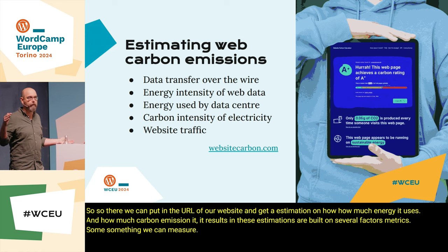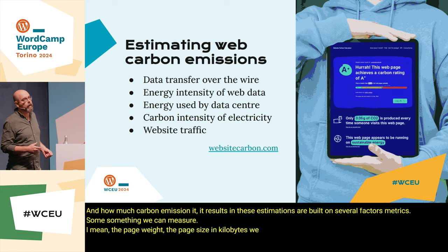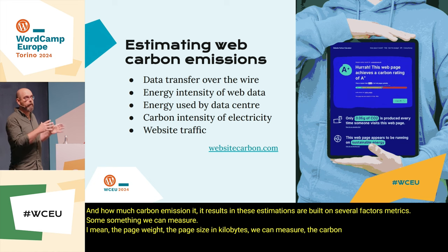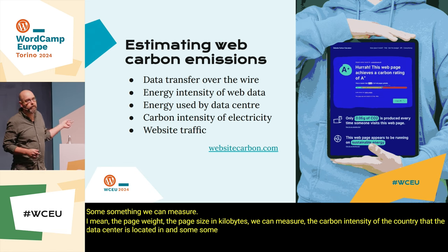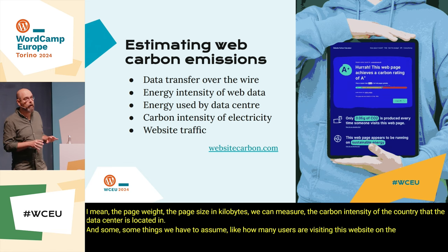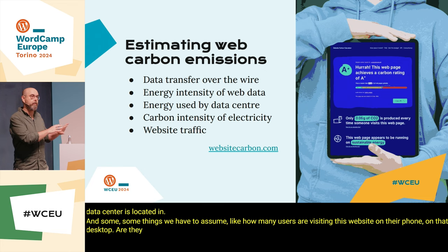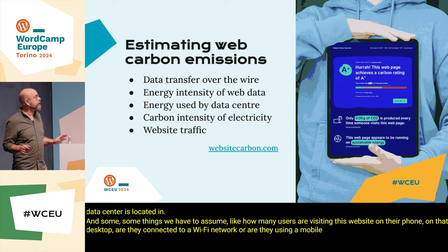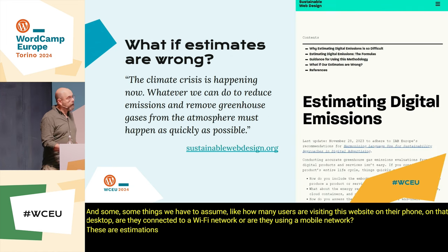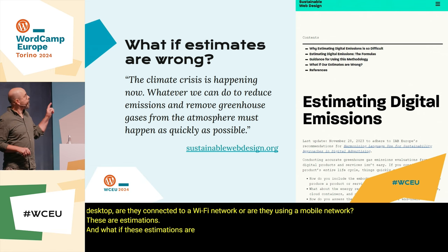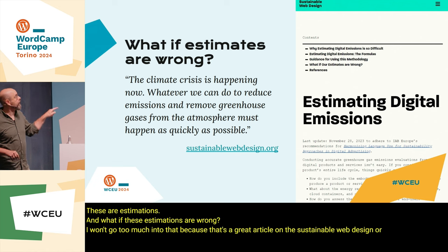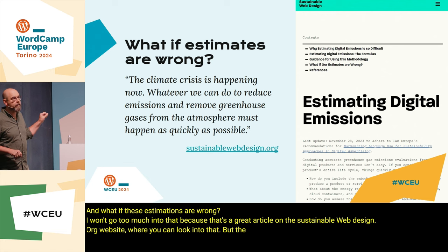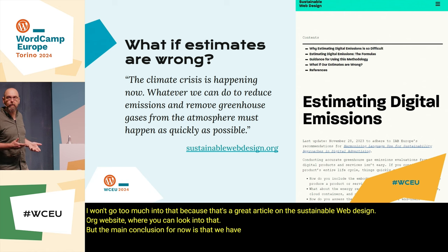And some things we have to assume, like how many users are visiting on their phone versus desktop, or whether they're connected to Wi-Fi or a mobile network — these are estimations. What if these estimations are wrong? There's a great article on the SustainableWebDesign.org website where you can look into that. But the main conclusion is that we have the opportunity to do something now, even if our calculations are not 100% perfect.